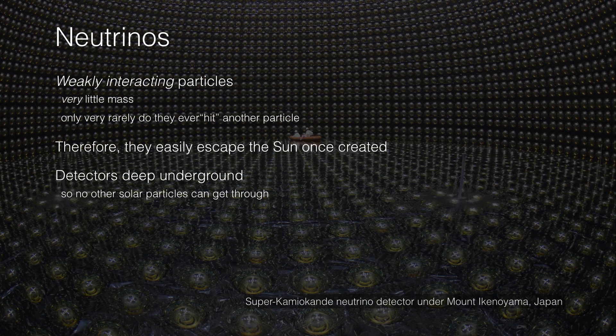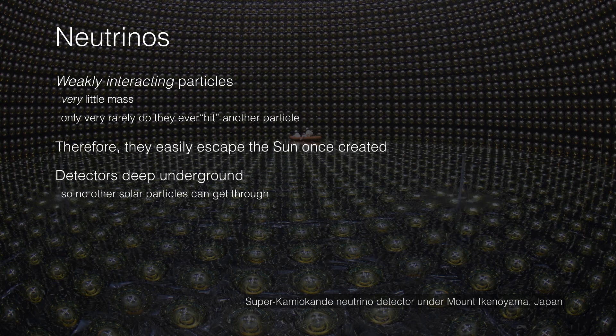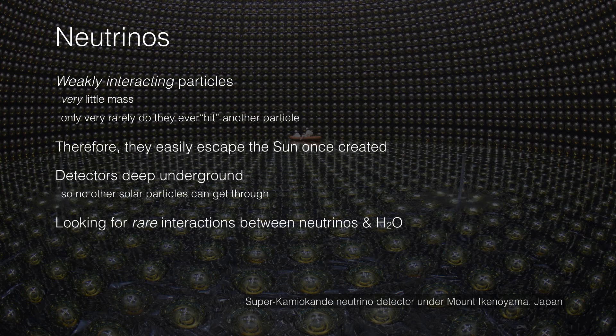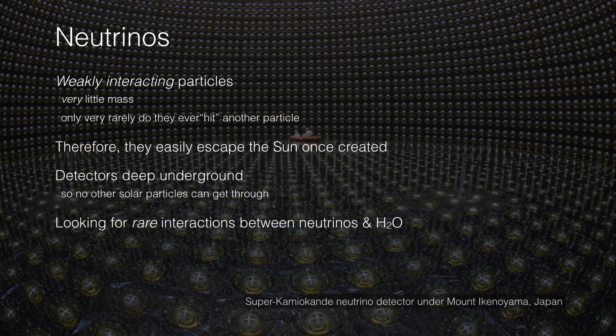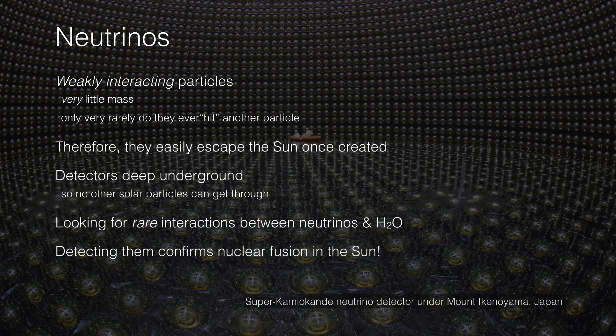We build detectors deep underground because in addition to neutrinos and light, there are other particles such as protons and plasma that are continuously raining down on the earth. We need to build detectors deep underground to block out all those other particles and let the neutrinos just come sailing through. These interactions are extremely rare. We fill huge chambers with ultra-pure water, and surrounding the chamber are photomultiplier tubes whose job is to detect light, amplify that signal, and send it to a computer. When one or more detectors detect a tiny flash of light produced by a neutrino knocking into a molecule of water, detecting them confirms nuclear fusion in the sun.